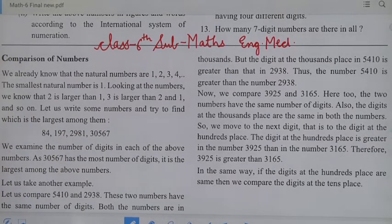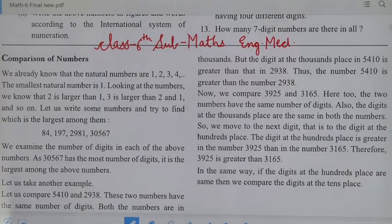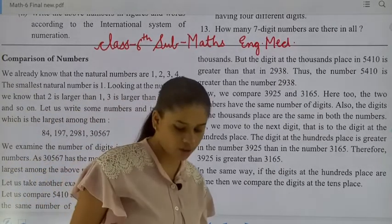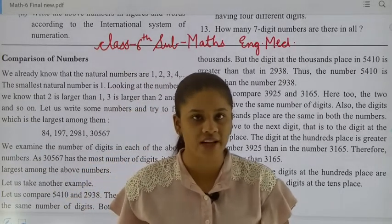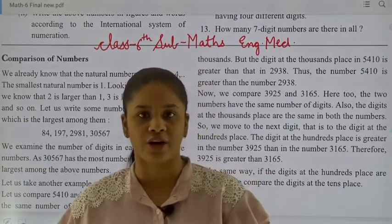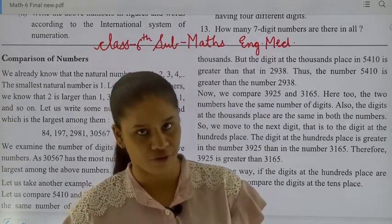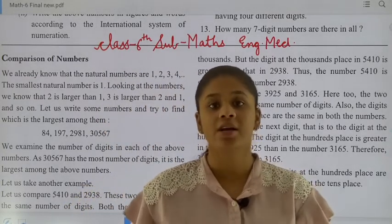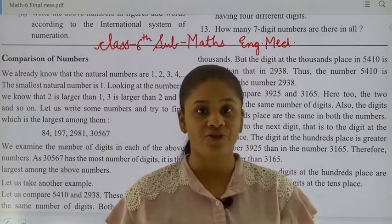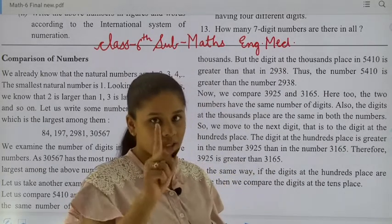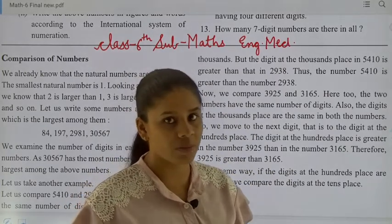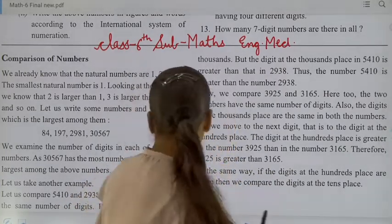We already know that the natural numbers are 1, 2, 3, 4. Students, at the starting of the chapter I told you that natural numbers start from 1, 2, 3, 4. And what are whole numbers? Whole numbers start from 0. In whole numbers, 0 is also included. But in natural numbers, 0 is not included.